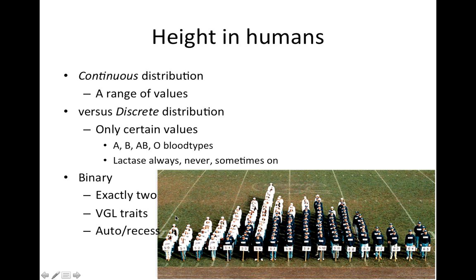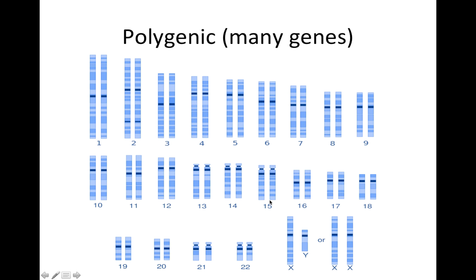So if we focus on this continuous distribution trait of height, here we have our karyotype with our 46 chromosomes. Height turns out to be a polygenic trait — that means there are many genes. Here we're going to use five, but overall it looks like it's more than 30 genes influencing human height. That would mean somewhere on this karyotype, maybe on chromosome two, we'd have a gene with two different alleles, which we can call A1 and A2. Let's call this gene A, with alleles 1 and 2.